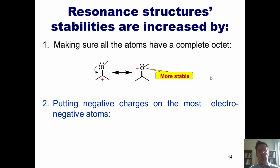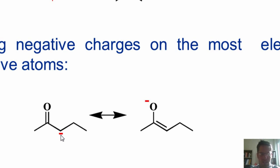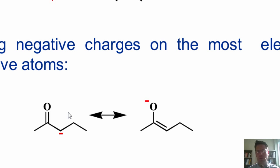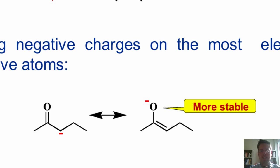Rule two: put negative charges on the most electronegative atoms. Here's an example. I've got a resonance contributor with a negative charge on a carbon. You can imagine that negative charge thrusting down to close like a door, forming a carbon-carbon double bond and pushing these pi electrons up onto the oxygen to give me a negative charge on the oxygen. These are both completely legitimate resonance contributors. In the example on the right, I have the negative charge on the more electronegative atom, the oxygen, whereas in the example on the left, it's on a carbon. Thus, the example on the right is the more stable one.